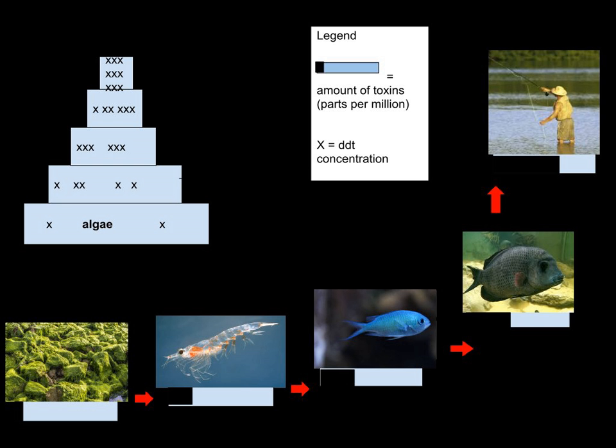Biological magnification often refers to the process whereby certain substances such as pesticides or heavy metals work their way into lakes, rivers, and the ocean, and then move up the food chain in progressively greater concentrations as they are incorporated into the diet of aquatic organisms such as zooplankton, which in turn are eaten perhaps by fish, which then may be eaten by bigger fish, large birds, animals, or humans.